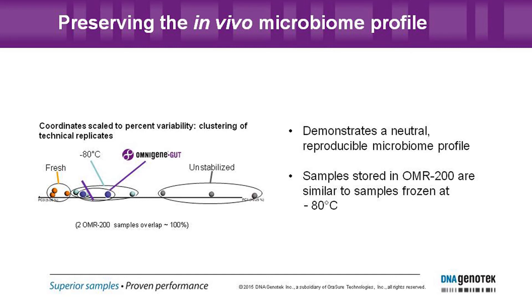I'd like to introduce the concept of neutrality at the point of stabilization — in essence, preserving the in vivo microbiome profile. We have a linear PicoA plot here where the moral of the story is the closer to the fresh samples on the left, the better. You can see that out of the three OmniGene Gut samples, two actually overlap, and it's close to the minus 80 frozen samples as well. Whereas the unstabilized samples, after 14 days at ambient temperature, are all the way out to the right — that's the equivalent of collecting from your neighbor. It's a completely different profile after 14 days than at the point of collection. OmniGene Gut demonstrates a neutral, reproducible microbiome profile, and samples stored in OmniGene Gut are similar to samples frozen at minus 80 and fresh samples.